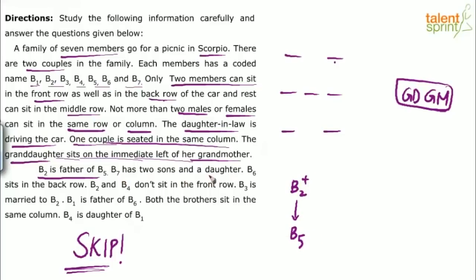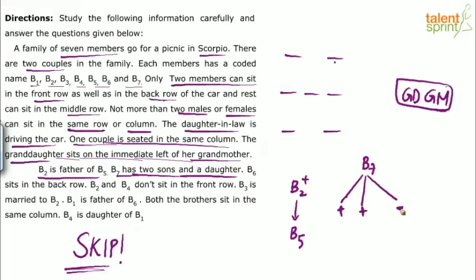B7 has 2 sons and a daughter — so basically 3 children: 2 male and 1 female. B6 sits in the back row, which is this row here — so B6 has to come in the back row, either the left or right seat.